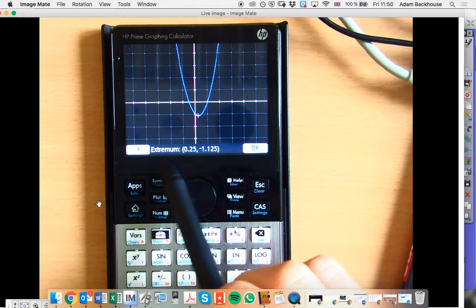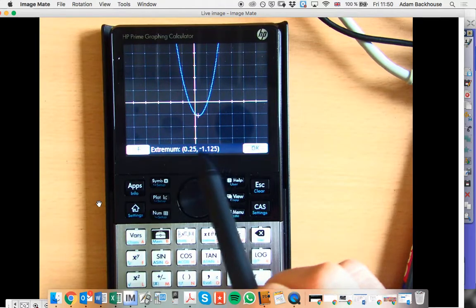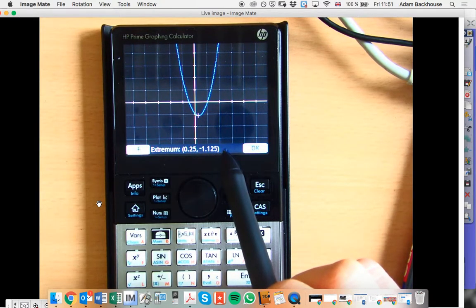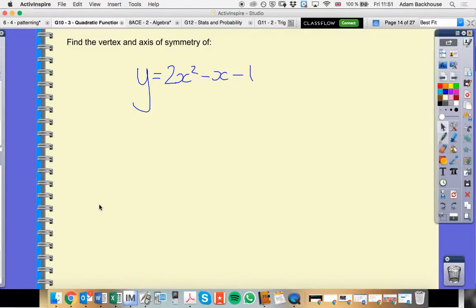So there we are. It gives us the coordinate 0.25, negative 1.125. So that is the coordinate of my vertex.